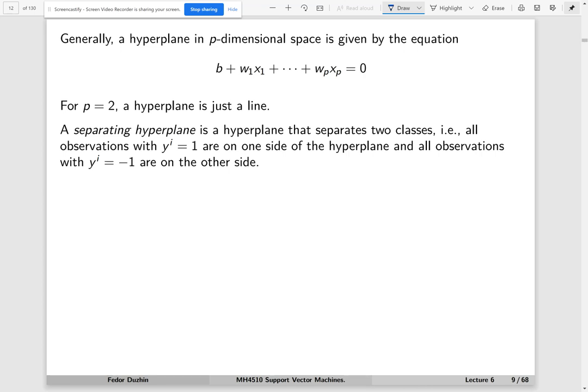A separating hyperplane is a hyperplane that separates two classes. If p equals two, then it is a line that separates two classes. If p is zero, then a separating hyperplane is just a point that separates two classes.